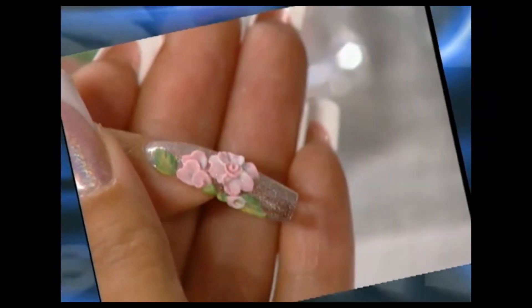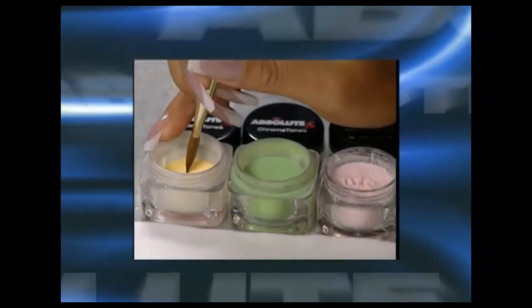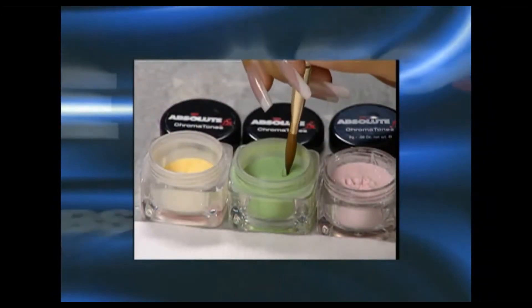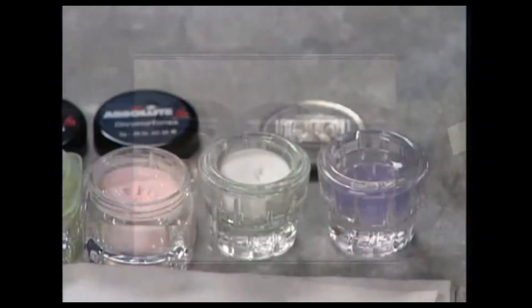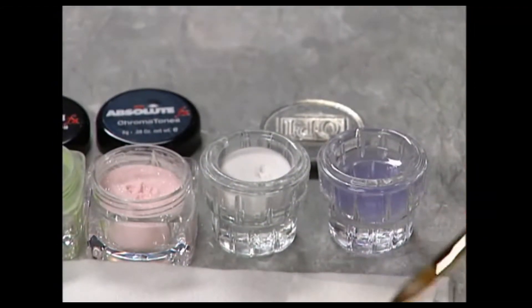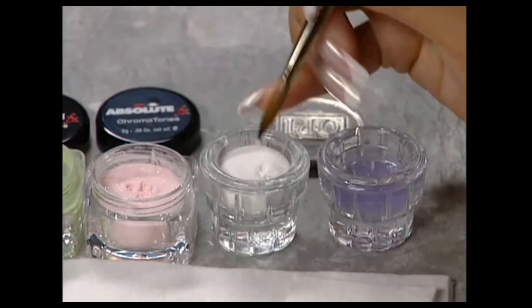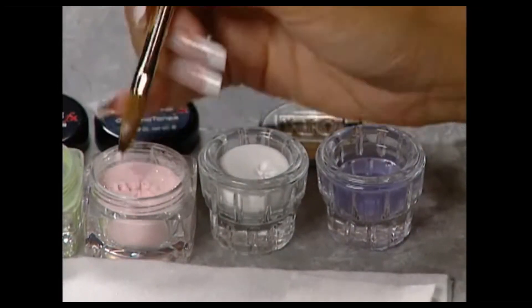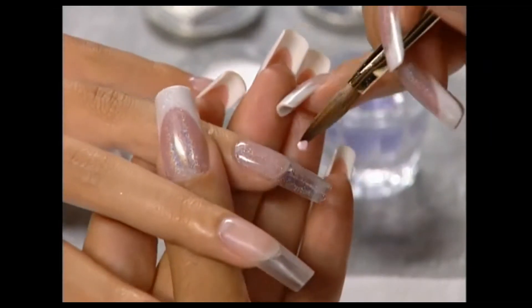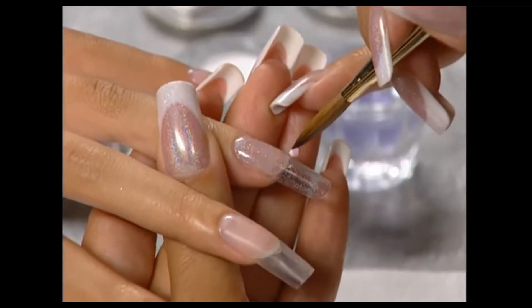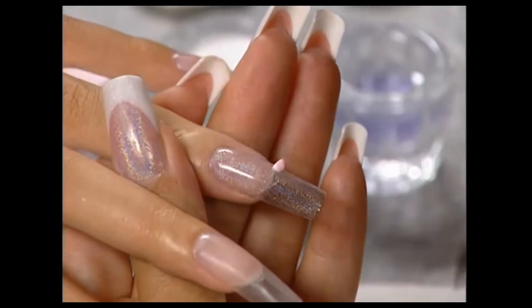Absolute FX acrylic powders can be custom blended to make just the right shade. Working dryer will help you create a more three-dimensional look to the design. Double-dipped beads also add additional dimension. For this flower design, the white bead is dipped into a pink shade made by custom blending Absolute Sparkle FX, Pastel FX, and Red FX.